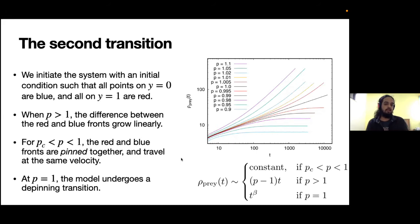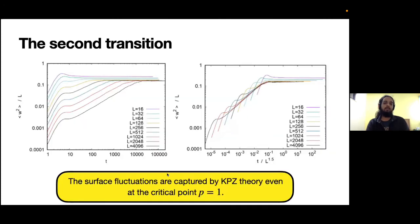Given that p equal to one is a critical point, we asked whether we could see signatures of the transition at p equal to one in the surface fluctuations. However, we were able to show that across this transition - below p equal to one, above it, and at equal to one - the surface fluctuations were governed by the KPZ exponents, and the surface fluctuations are captured by KPZ theory across this transition.